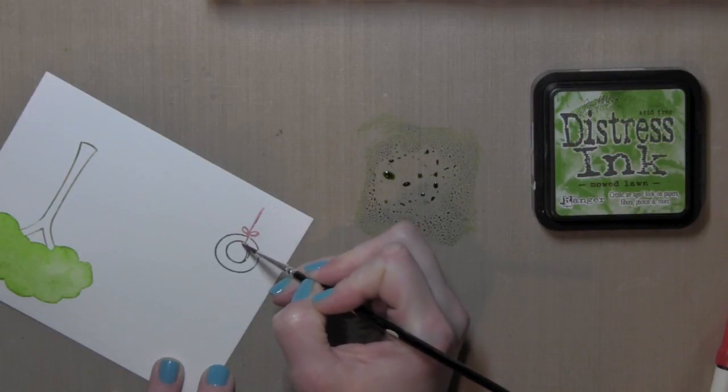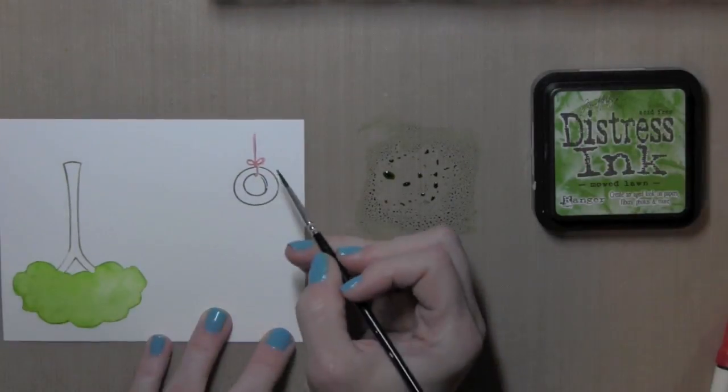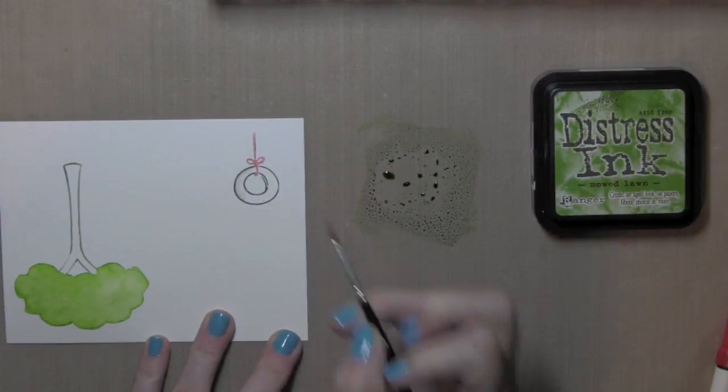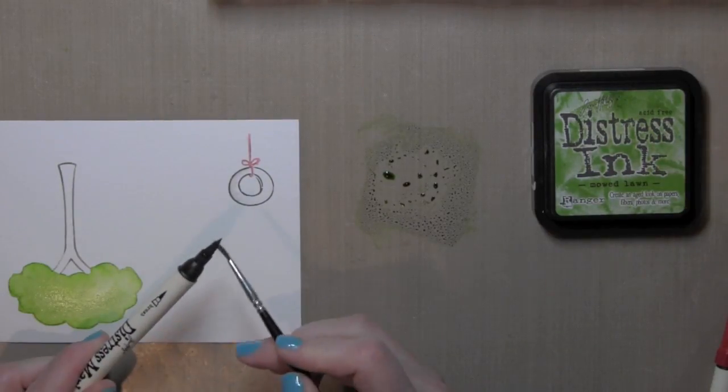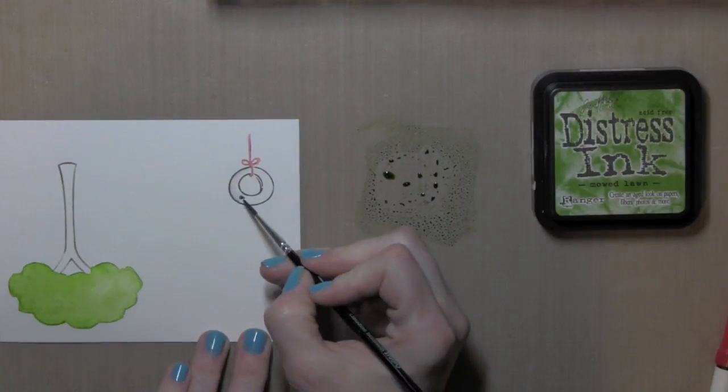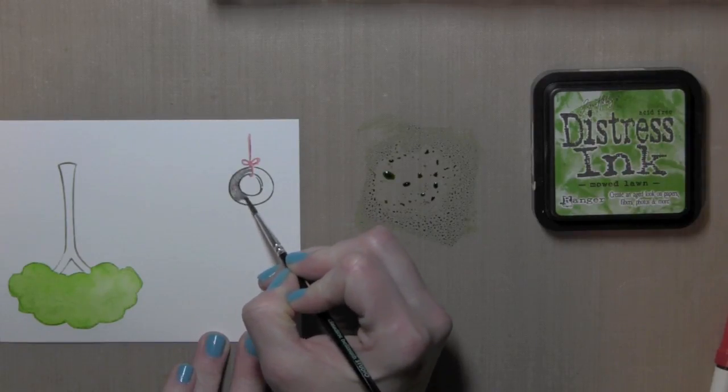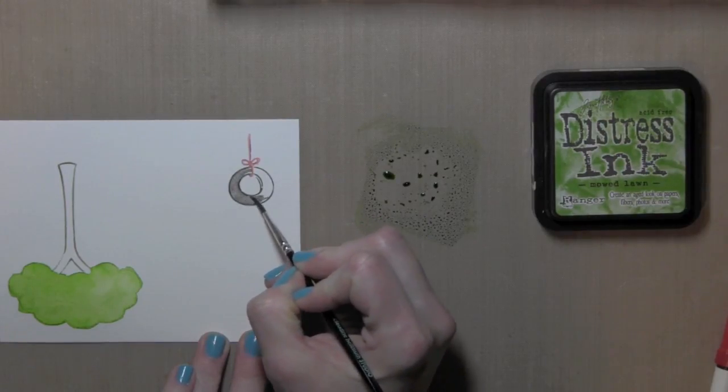I am going to stamp the cute tire on the swing. Again, I used my distress markers to add color to the stamp before stamping it on this Tim Holtz watercolor paper and I used black soot for the tire and festive berries for the red string.